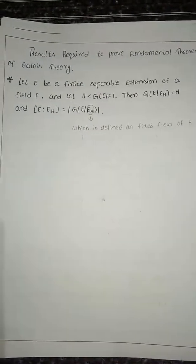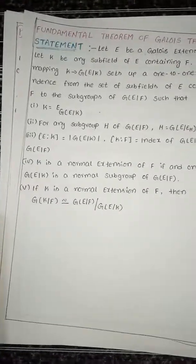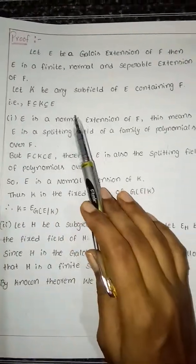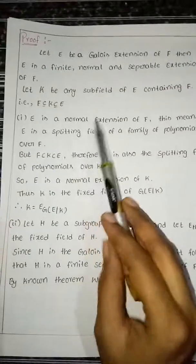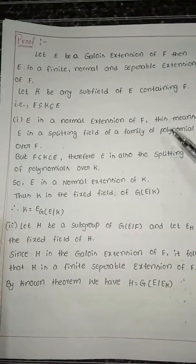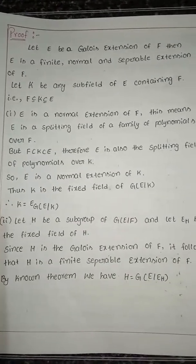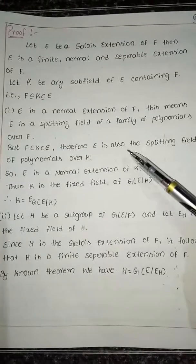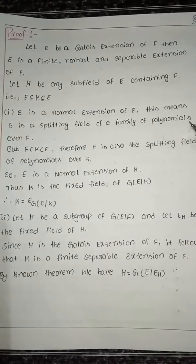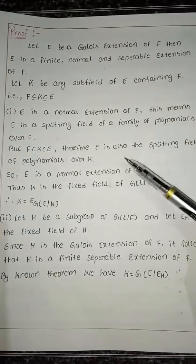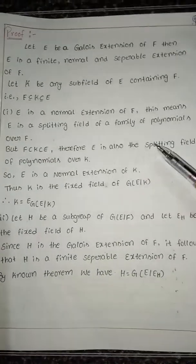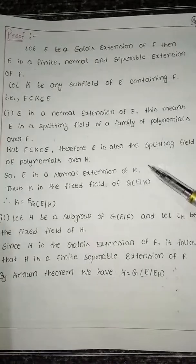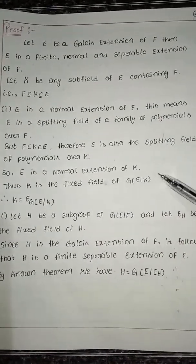Now let us see what those results are. Let E be a Galois extension of F. Then E is a finite, normal, and separable extension of F. Let K be any subfield of E containing F, that is F ⊆ K ⊆ E. The proof of the first one: E is a normal extension of F, meaning E is a splitting field of a family of polynomials over F. But since F ⊆ K ⊆ E, E is also the splitting field of those polynomials over K. So E is a normal extension of K. Thus K is the fixed field of G(E/K).